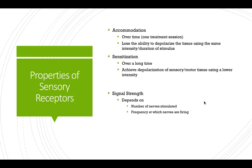A couple of things to know about the sensory receptors and the afferent nerves they travel on. Accommodation: over time — perhaps over one treatment session — that receptor and its afferent nerve, the first-order neuron, will actually lose their ability to depolarize tissue with the same intensity and duration of stimulus. Basically those receptors get used to having that stimulus and stop sending the signal at the same intensity.